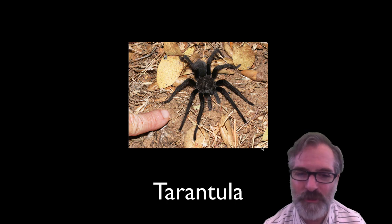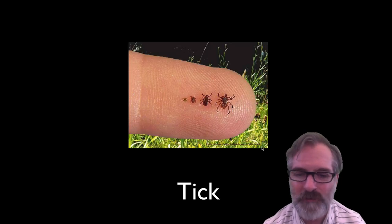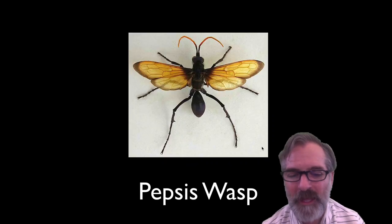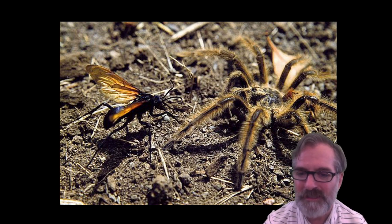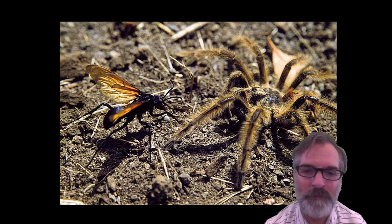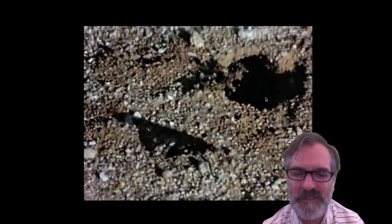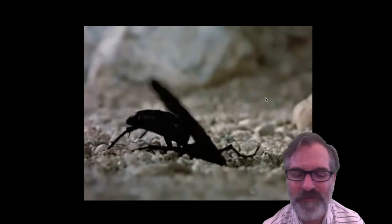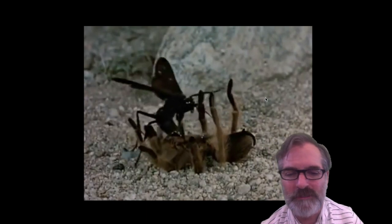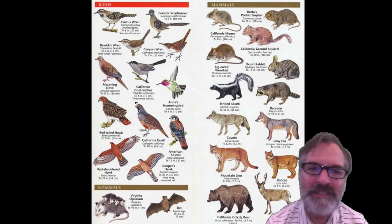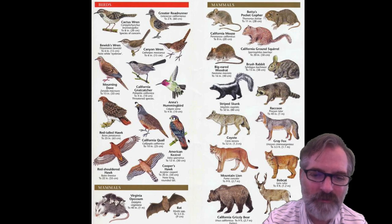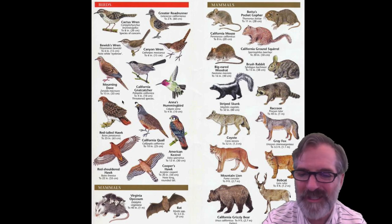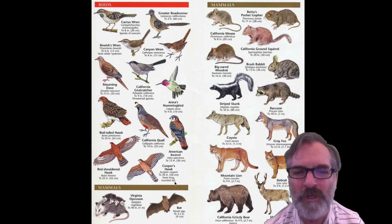Moving from mammals to arachnids: you've got the California tarantula, ticks, and pepsis wasps—which is really interesting. The wasp stings the tarantula, paralyzing it, then lays its egg right there. The egg feeds on the living tarantula—kind of like a living baby bottle, and pretty creepy. The wasp drags it down into the tarantula's own hole to lay the egg. You can see how diverse the birds are as well: roadrunners, wrens, hummingbirds, kestrels, Cooper's hawk, red-shouldered hawk, and red-tailed hawk.